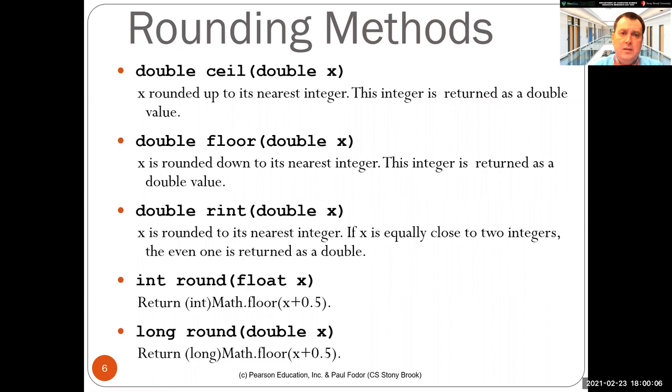Then we have the rounding methods. So they take a double. Ceiling takes a double x and it rounds it up to the nearest integer. If x is a double that represents an integer, then it basically returns that integer as a double. The only difference is that the ceiling, although we know that it returns an integer, it returns it as a double value. So the result of ceiling is double.